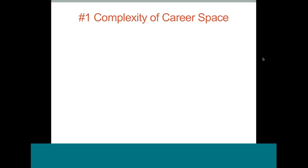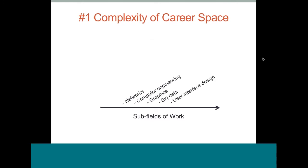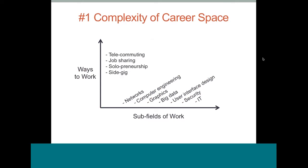The first reason is that the space of careers has become very complex, especially over the last 30 years with globalization and technological advances. Jobs are becoming increasingly specialized — just think about all the fields related to computers alone: computer networks, computer engineering, graphics, big data, user interface design, security, IT. Back in the 1960s, there were probably only a handful of computer-related jobs. Not only has there been a huge explosion in subfields, there's also an increasing number of ways to work — telecommuting, job sharing, solopreneurship, side gigs — with 45 million Americans, or 22% of adults, having offered services on a gig platform.